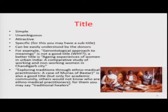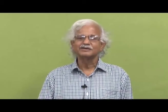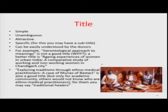Let me talk about the components of a research proposal one by one. The title should be simple, unambiguous, and specific — you may have a subtitle to make it specific — and it should be easily understood by donors. For example, 'A gerontological approach to meanings' is not a good title because it is unclear. A better title would be: 'Aging Experiences of Women in Urban India: A Comparative Study of Working and Non-working Women in Chandigarh City' — it is specific and self-evident.